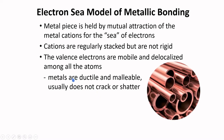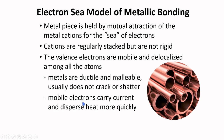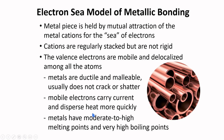This model can readily explain why metals are ductile and malleable and usually do not crack or shatter. Mobile electrons carry current and disperse heat more quickly. Metals have moderate to high melting points and have very high boiling points.